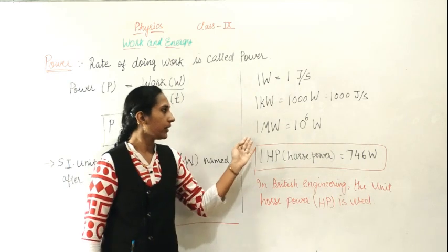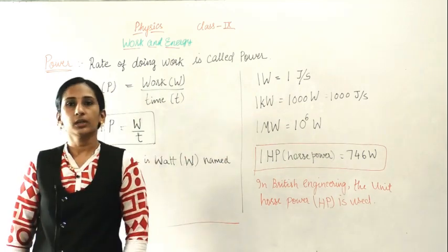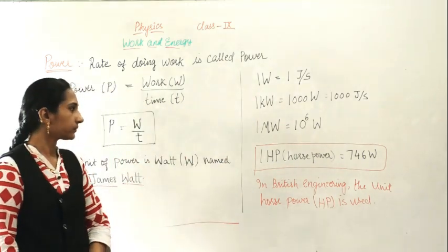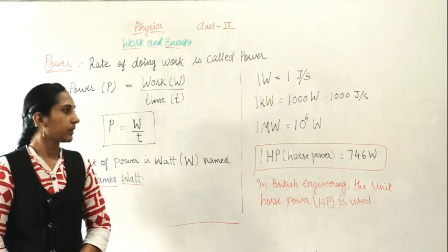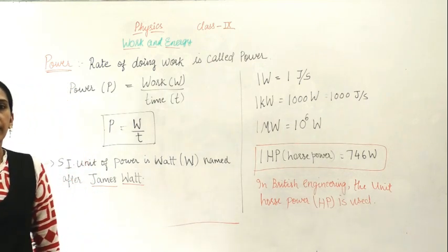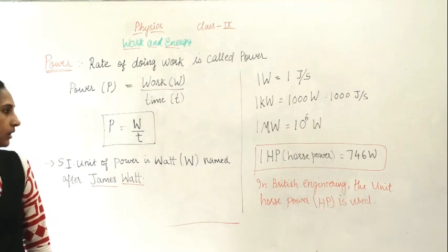And 1 Megawatt equals 10 raised to 6 Watt. The last unit is 1 horsepower, that is 746 Watt.